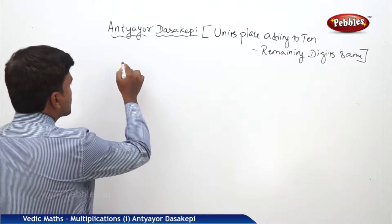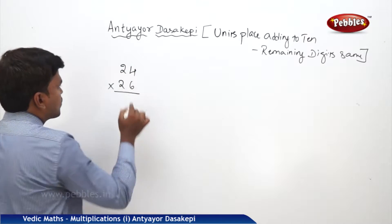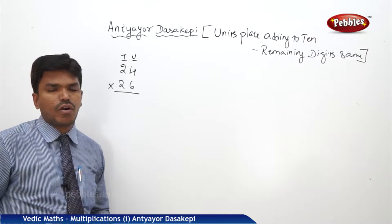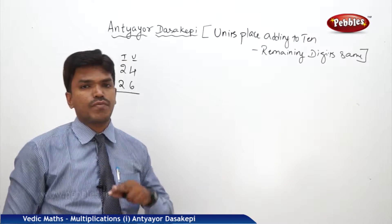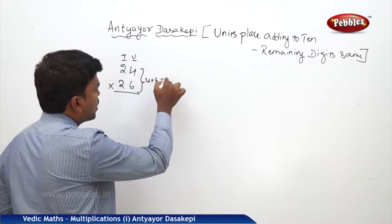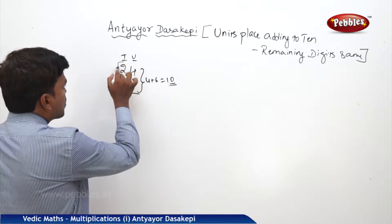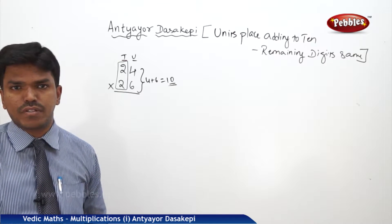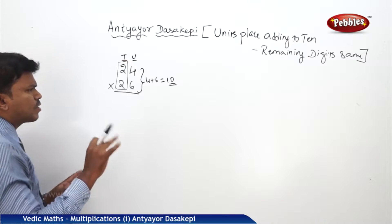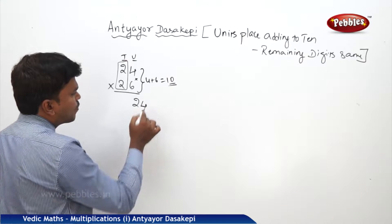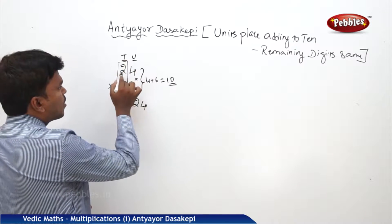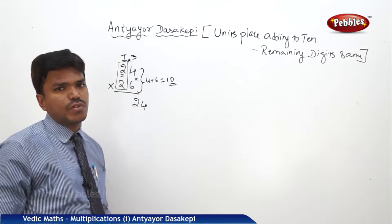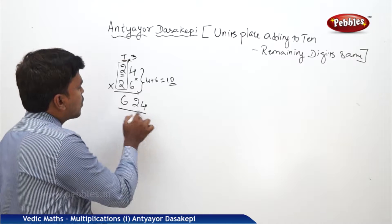For example, suppose I want to multiply 24 into 26. The units place has 4 and 6 — what is 4 plus 6? It is 10. And the tens place digits are both 2, so they are the same. Both conditions apply. Simply multiply the units digits: 4 into 6 is 24, so write 24 on the right. Then multiply the tens digit 2 with its next number 3: 2 into 3 is 6. So your answer is 624.